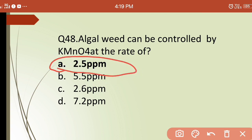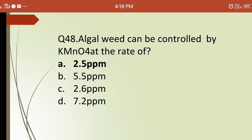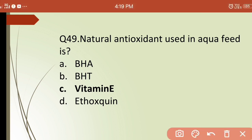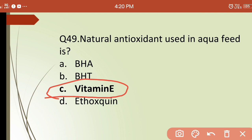Forty-ninth question: which natural antioxidant is used in aquafeed? Options are: (a) BHA, (b) BHT, (c) vitamin E, (d) ethoxyquin. The correct answer is (c) vitamin E — vitamin E, also called tocopherol, is the natural antioxidant used in aquafeed. BHA, BHT, and ethoxyquin are synthetic antioxidants.